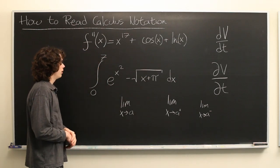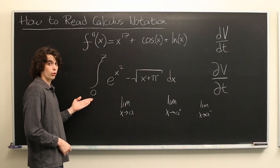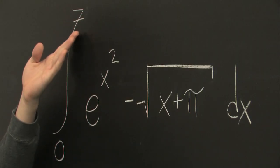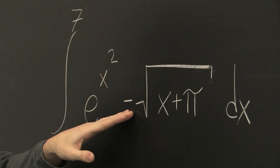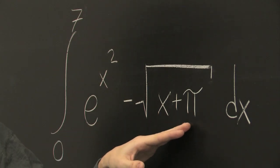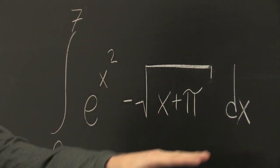Let's take a look at this. This is the integral from 0 to 7 of e to the x squared minus the square root of x plus pi, dx.